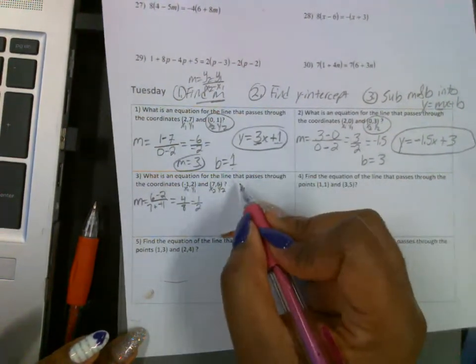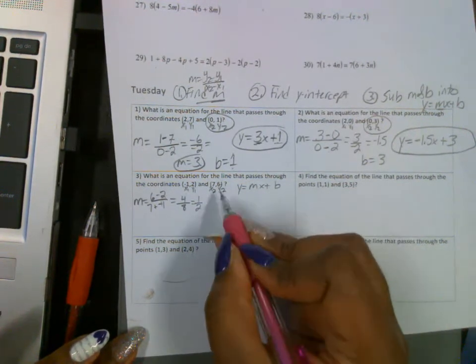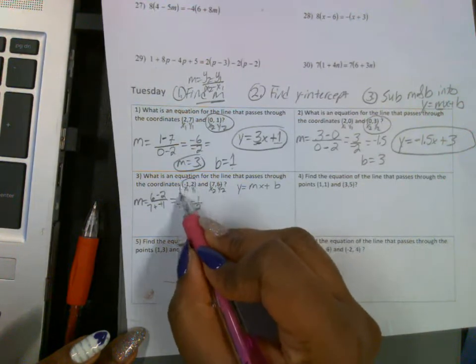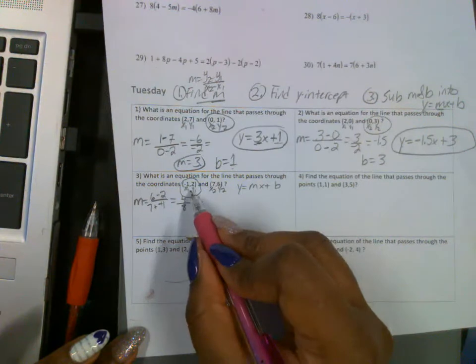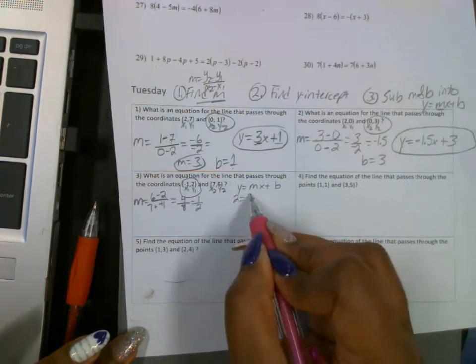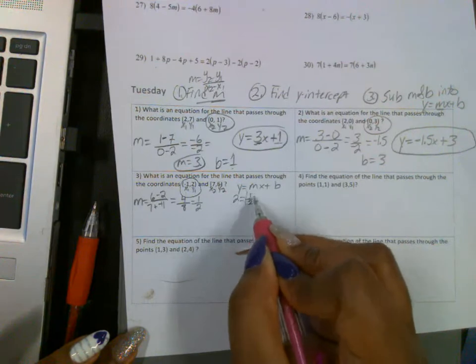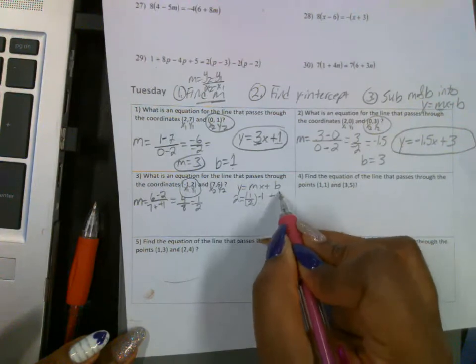To find b, you use y equals mx plus b and substitute one of the points. I'm going to use the easier point, this one, and your m. So if I use this point, my y is 2, my m is 1 half, and my x is negative 1. And put plus b.